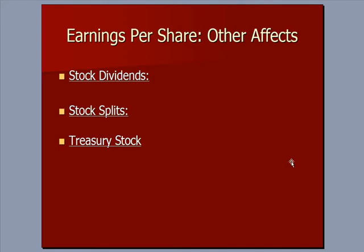We've talked in the past about earnings per share, and there are some situations where earnings per share can change. The basic formula for earnings per share is earnings divided by common shares outstanding. We're going to add on some other changes that can affect earnings per share: stock dividends, stock splits, and treasury stock.